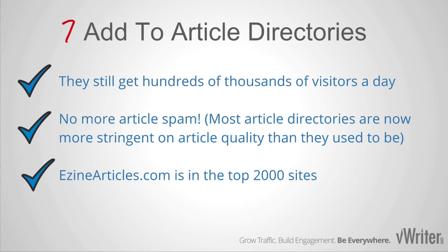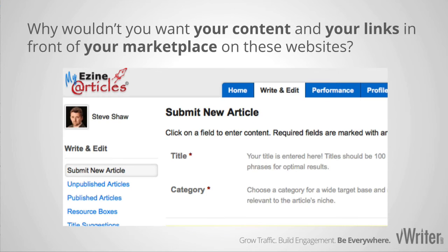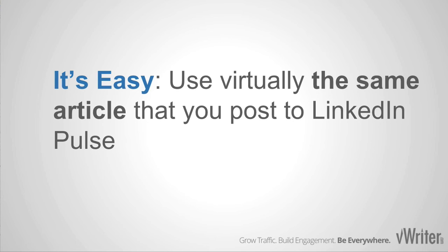Finally, number seven: add to article directories. Article directories are still some of the most popular sites on the web and get hundreds of thousands of visitors a day. While they used to be plagued by lower quality content, the remaining article directories tend to be a lot more stringent on quality. As a consequence, they are becoming more viable again as places to submit your content and add your links. For example, EzineArticles is in the top 2000 sites. The good news is you can use virtually the same article that you post to LinkedIn Pulse and add that same content to these article directories quickly and simply.